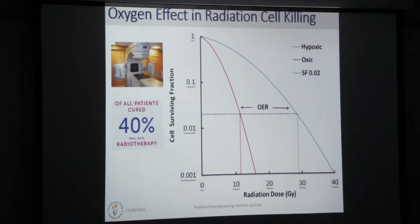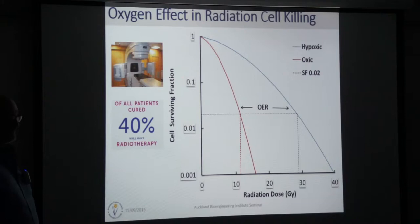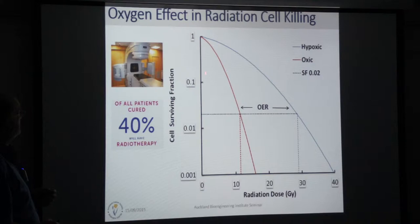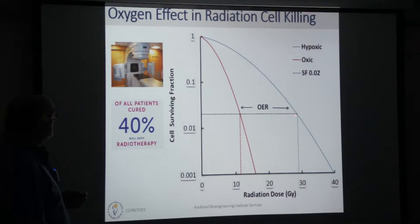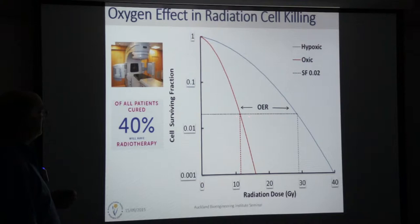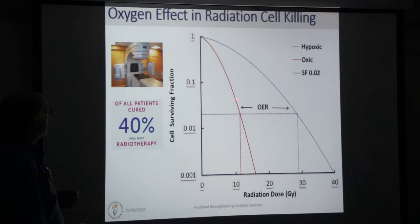One of the major reasons why hypoxia is such a problem is that oxygen is required to fix the initial DNA damage caused by radiation — it oxidises the lesions that ionising radiation causes. This is shown in a survival curve as a function of radiation dose. Under well-oxygenated conditions there is substantial killing, but under anoxic conditions cells are much more resistant by a factor called the oxygen enhancement ratio, which is generally of the order of about 3, causing enormous resistance in cancer.